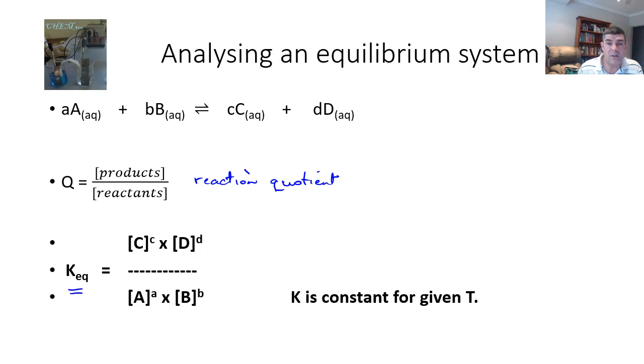What we can do is have a look at a system that is in equilibrium and what I've given you here is just a standard four component equilibrium system. Two reactants over here and two products over here and the actual substances themselves are listed by A, B, C, D and then the coefficient in front by the lower case of the same letter.